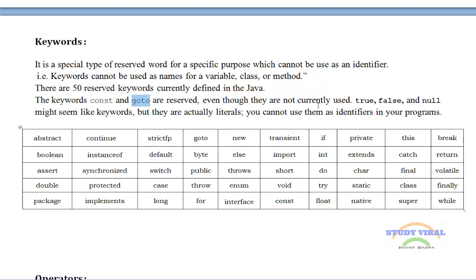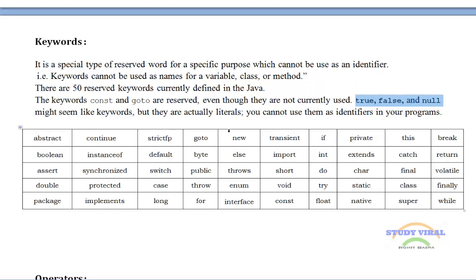Out of those 50, two keywords — const and goto — are reserved but not currently in use. Also, in Java exams with multiple choice questions, they may ask which one is or is not an identifier. Make sure you know that true, false, and null are NOT keywords — they are literals. Keep that in mind.